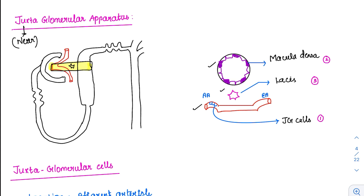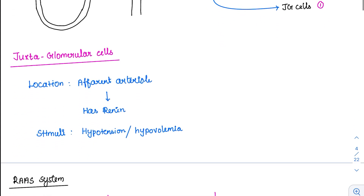The macula densa — its location is very important because there have been controversies about its location. But it is located exactly in the thick ascending limb. Coming to the juxtaglomerular cells, their location is in the afferent arteriole.